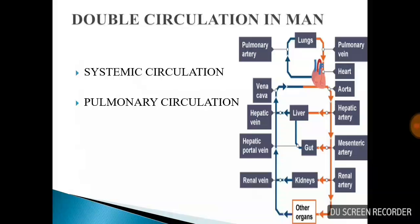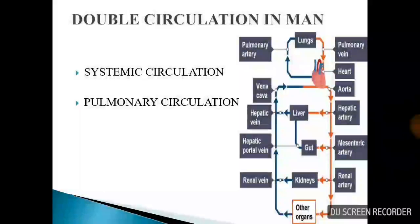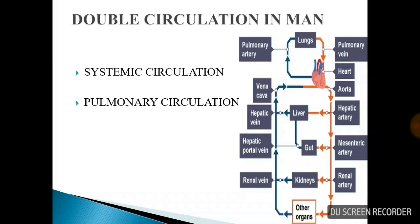The pumping action of the heart leads to double circulation in humans — systemic circulation and pulmonary circulation. Systemic circulation supplies all parts of the body. The main artery is the aorta. The aorta divides into arteries and finally into capillaries, supplying oxygenated blood to various body parts. That is systemic circulation.